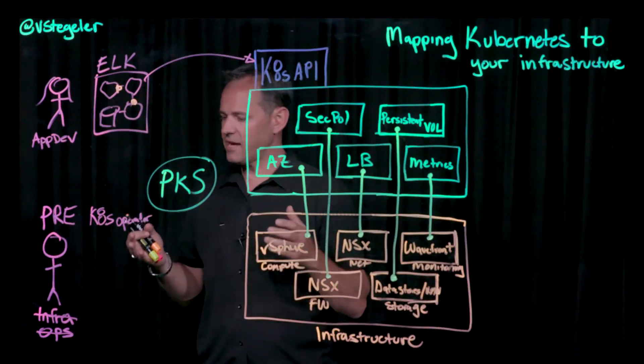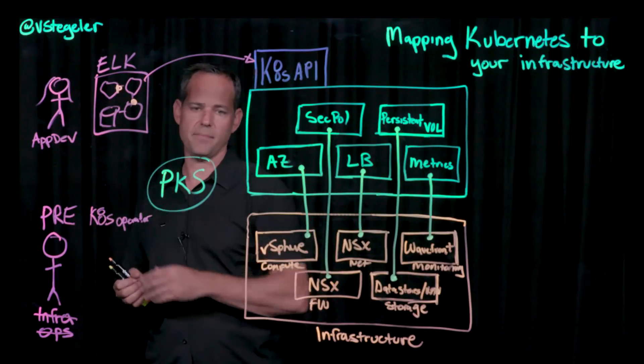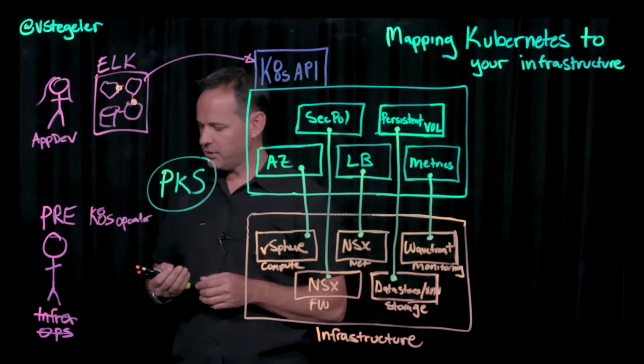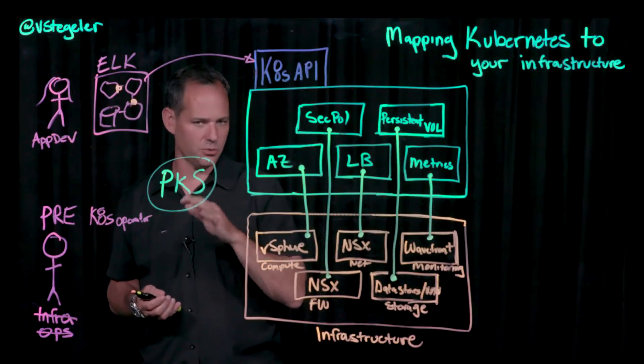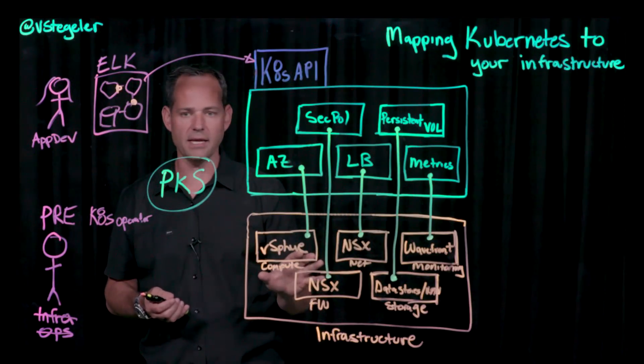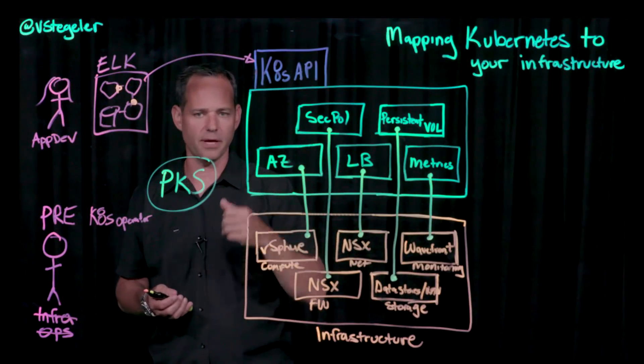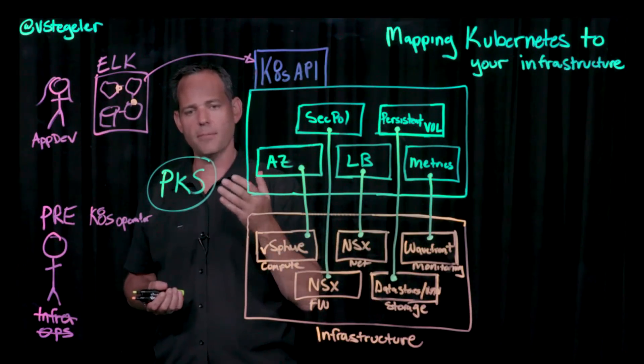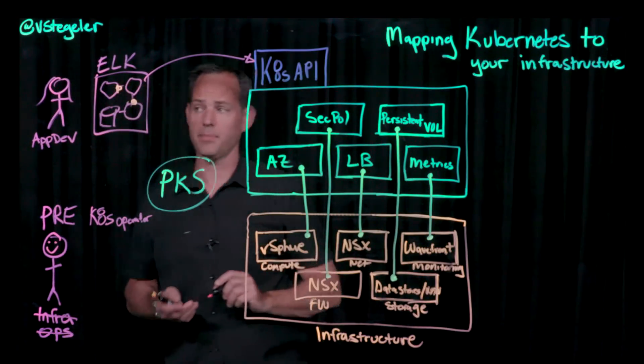So now we've satisfied the need of both the platform reliability engineer and the application developer. From a platform reliability engineer perspective, if you're leveraging PKS, you have a very consistent repeatable way to deploy Kubernetes, but you also have an easy way to map it. You have the ability to do upgrades and patching in a very easy and supportable way.